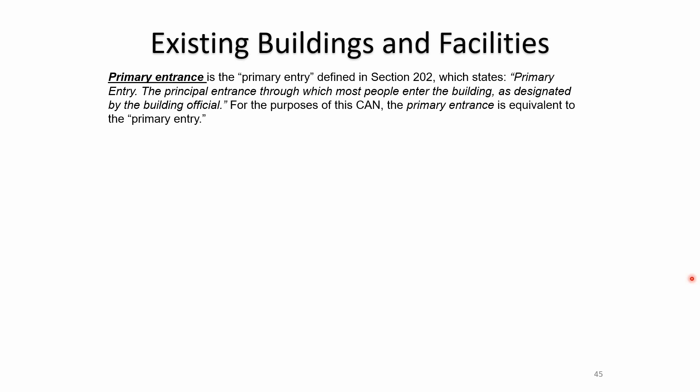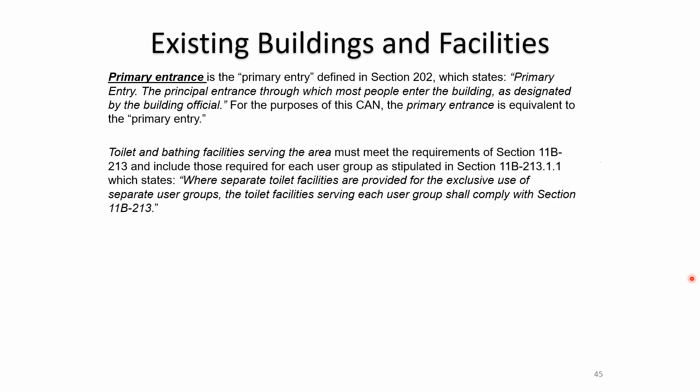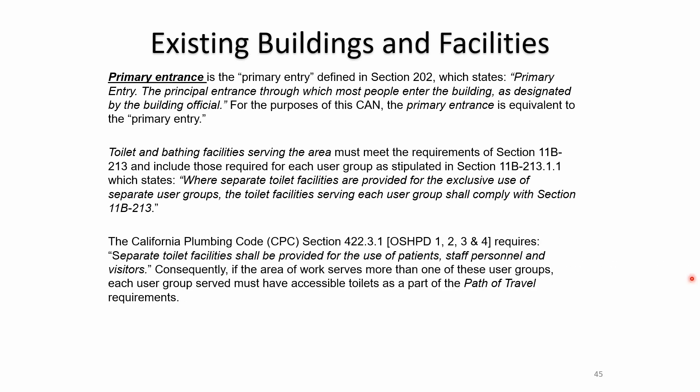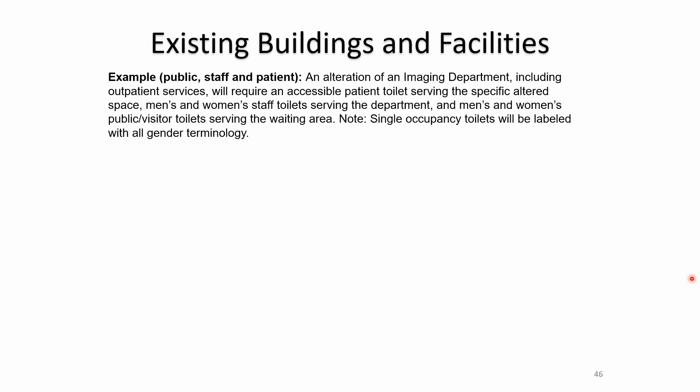If signage on the path of travel to the area of work does not meet the present or previous code, it can be considered for replacement as part of accessible path of travel upgrades. The primary entrance is the principal entrance through which most people enter the building. Toilet and bathing facilities serving the area must be accessible and include those required for each user group. In healthcare, where separate toilets are provided for separate user groups, facilities serving each user group shall comply. The plumbing code requires separate toilet facilities for patients, staff, and visitors.